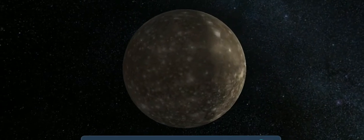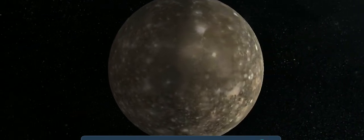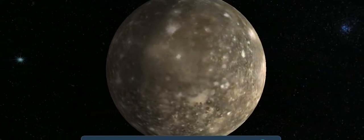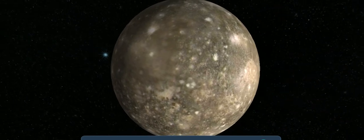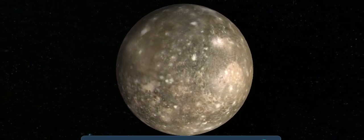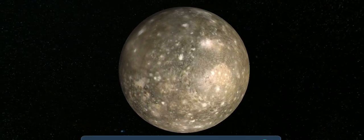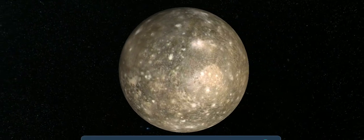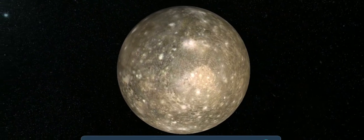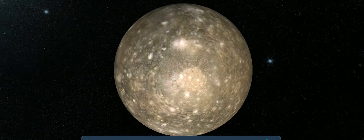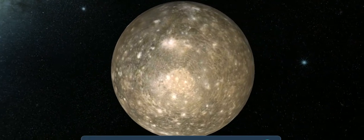Callisto. There are no distinct layers inside Callisto. According to data provided by the Galileo space probe, it consists of 40% ice as well as 60% rock and iron. Callisto's surface is the oldest in the solar system. It has not changed much in the past 4 billion years.